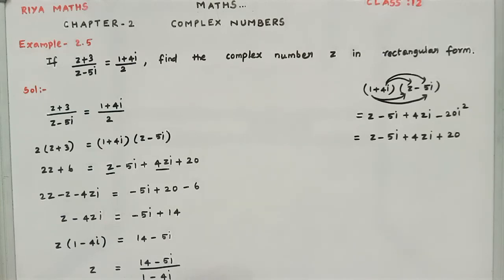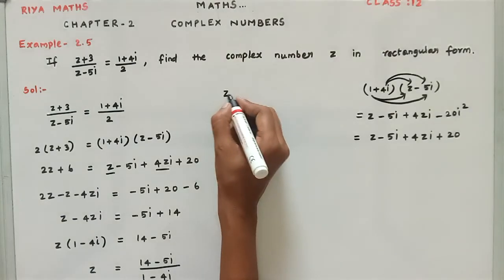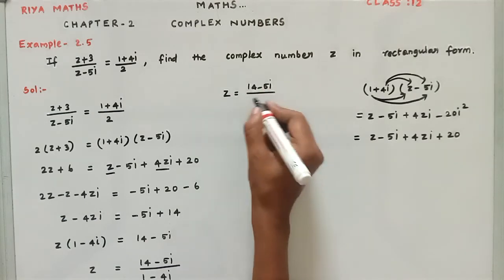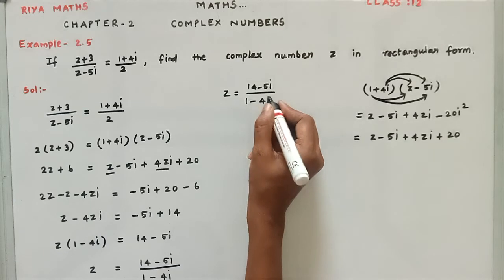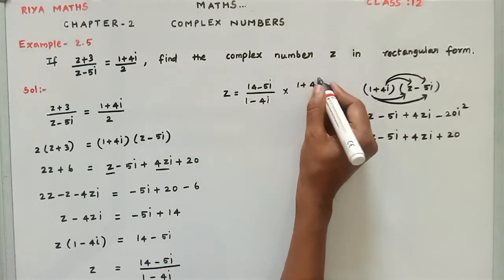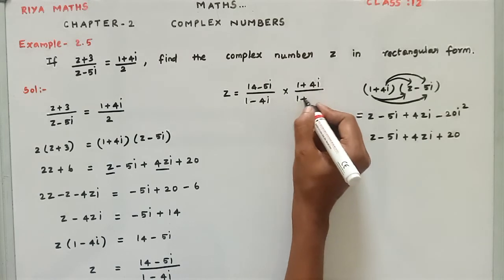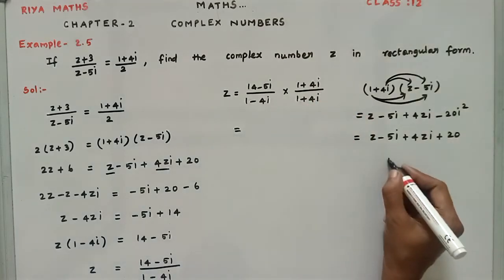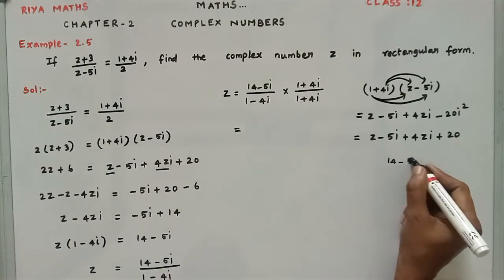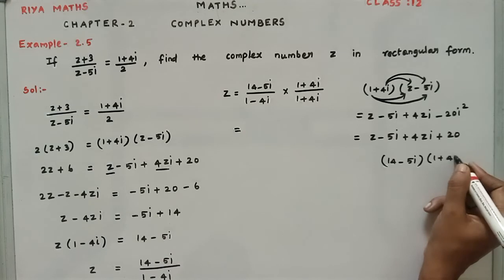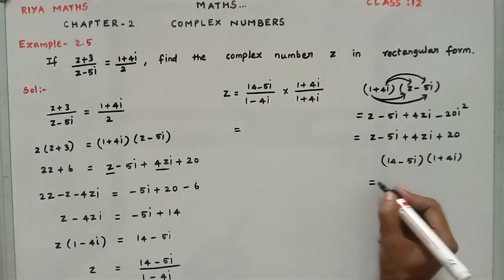To convert to rectangular form, take the conjugate of the denominator. So z = (14 - 5i) / (1 - 4i) multiplied by (1 + 4i) / (1 + 4i). First, multiply the numerator: (14 - 5i)(1 + 4i).